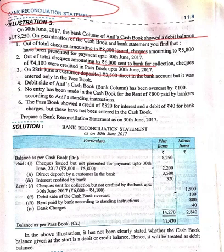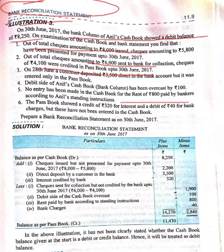No entry has been made in the cash book for the rent of 800 paid by the bankers as per standing instructions. Since 800 was debited in the bank, we will also minus this. Bank pass book showed a credit of 320 as interest — this will be added — and a debit of 40 for bank charges — this will be minus.